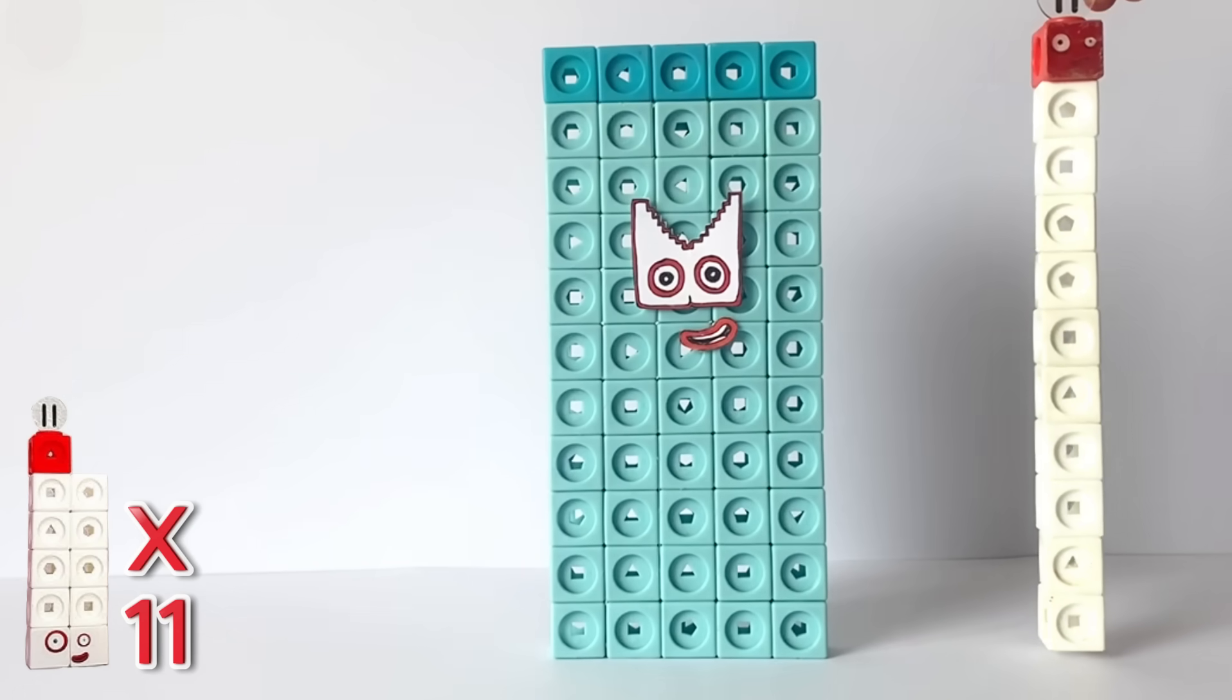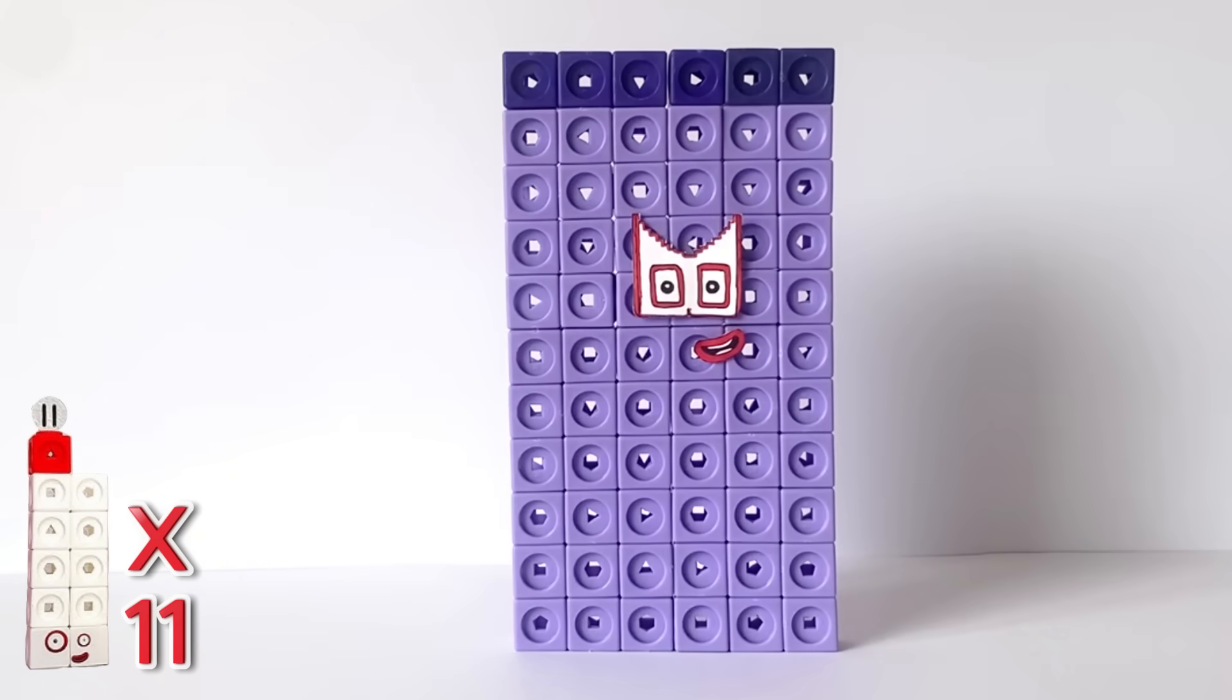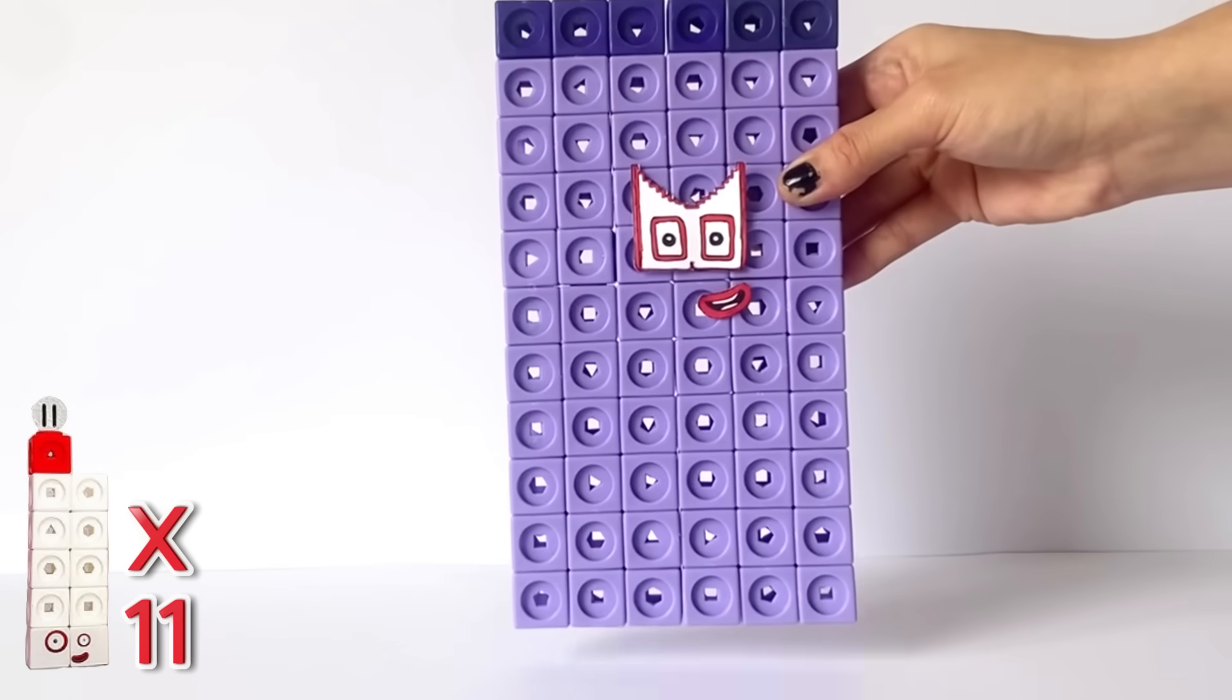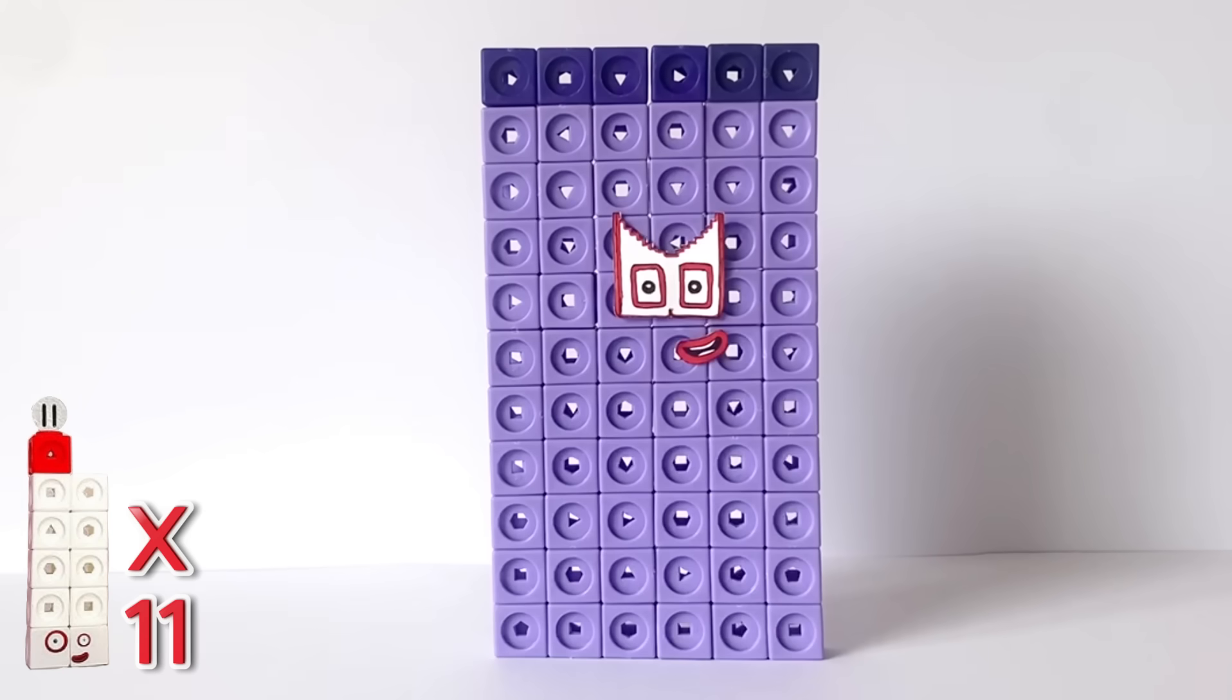So next, 6 times 11 equals 66. Again, 66 has a white and red step squad shape mask, because NumberBlock 66 is the 11th member of the step squad club.